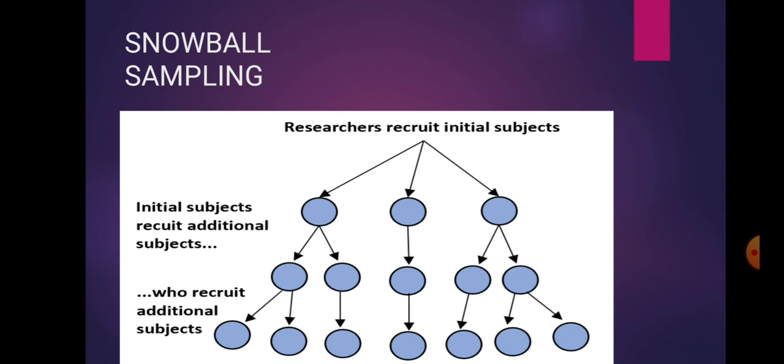It is a type of non-probability sampling where the initial respondents are selected at random, and subsequent respondents are then selected by reference or information from earlier respondents. It is also called network, chain, or reputational sampling. This method begins with a few people or cases, then gradually increases the sample size as new contacts are mentioned by the people the researcher started out with. Initial subjects recruit additional subjects, and those additional subjects recruit more, creating categories A, B, and C.